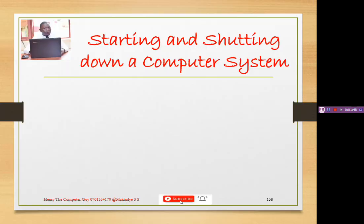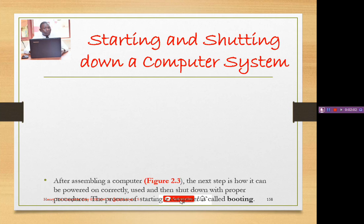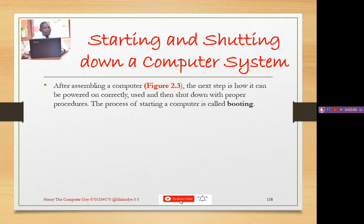We are now going to talk about how we can start and shut down a computer. We have been talking about all the components of a computer but we didn't discuss how to start it up and shut it down. After assembling a computer, the next step is how it can be powered on, correctly used, and then shut down with the proper procedures. You have to save all the work on your computer before shutting it down.